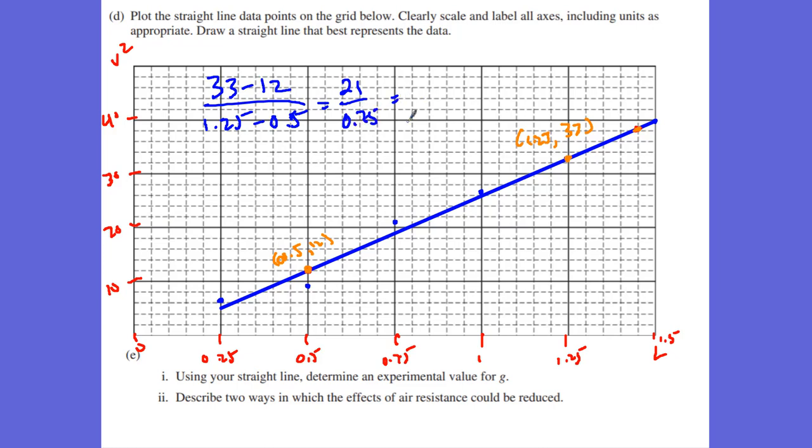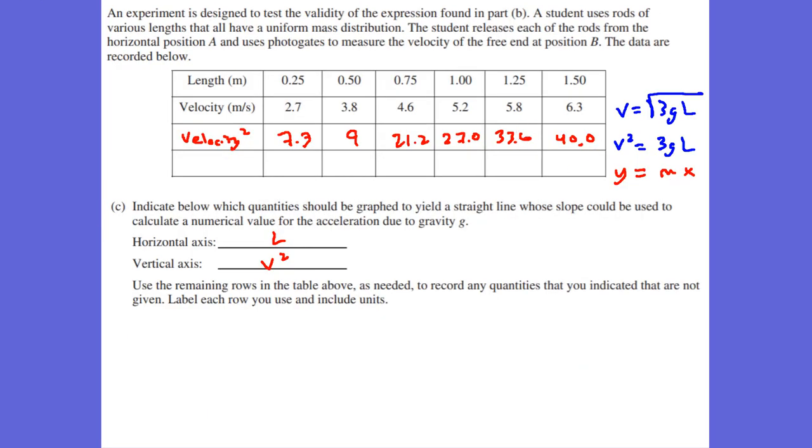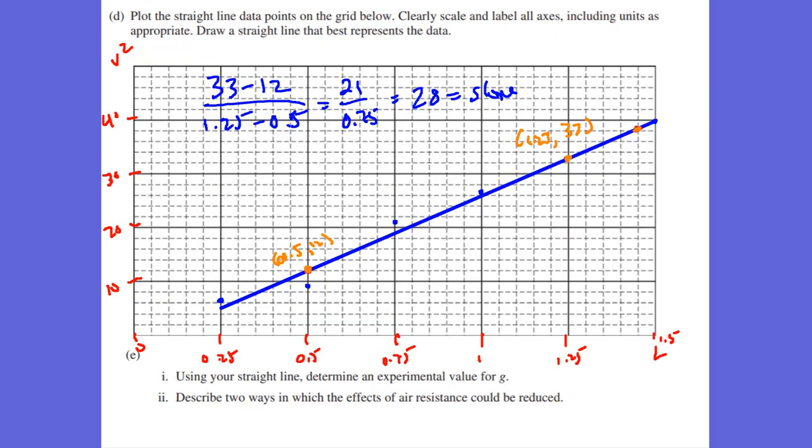So we get 21 right there. We get 1.25 minus 0.5, 0.75. Remember, I did not take any of my values. 21 divided by 1.75 is going to give me a slope of 28, a slope of 28. Now, keep in mind, look at what that slope is going to be equal to. That slope is going to be equal to 3 times gravity, 3 times gravity. So 3 times gravity is equal to 28, which means gravity, if I divide that by 3, ends up being 9.33 meters per second squared. And that's my experimental value of gravity.